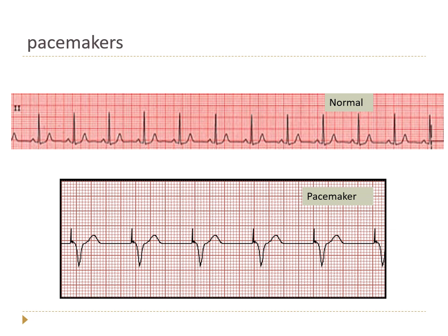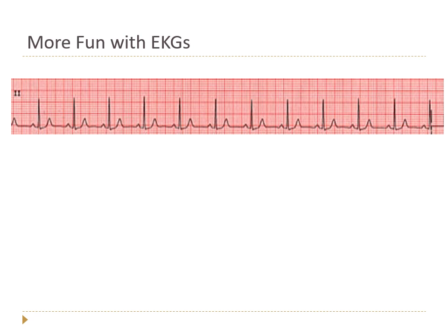Here's what a pacemaker looks like on an EKG. There's a little spike — the pacer spike — which is the electrical signal being sent from the pacemaker. In this individual we see a wide, strangely shaped QRS, because this pacemaker is going directly to the ventricle. This person has a lot of heart disease.